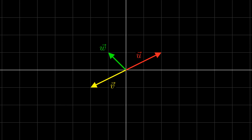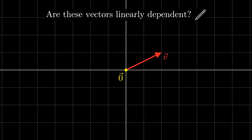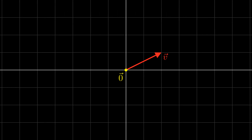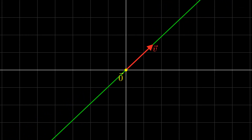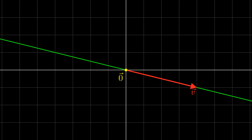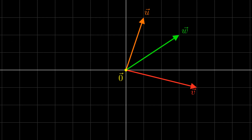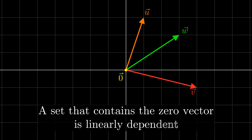Now, what happens if one of the vectors is the zero vector? For example, is the set containing the zero vector and this vector linearly dependent? Notice that the span of these vectors is just this line. This is the span of v by itself as well. The span is unchanged when we remove the zero vector, so these vectors are linearly dependent. This same argument works no matter what vector v is, because the zero vector can never change the span of a set. In fact, even with more vectors, the zero vector still can't contribute anything to the span. Thus, any set that contains the zero vector is linearly dependent.